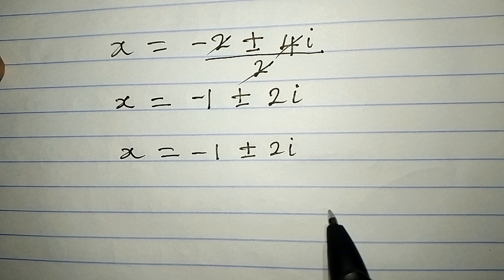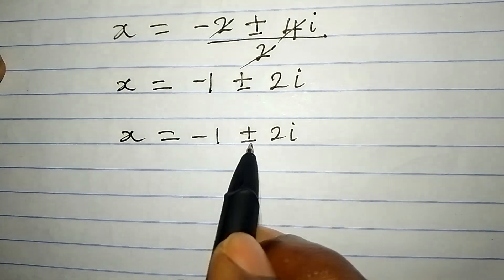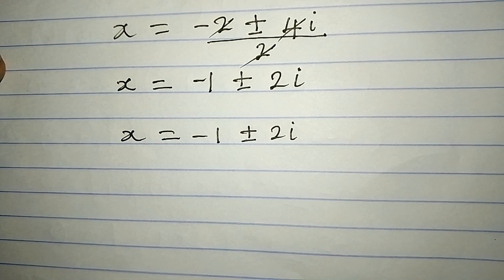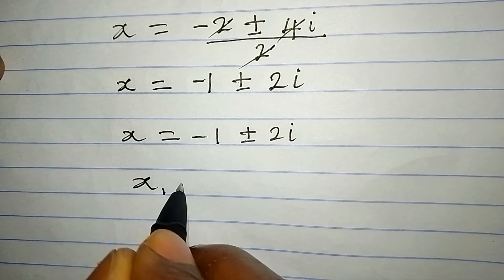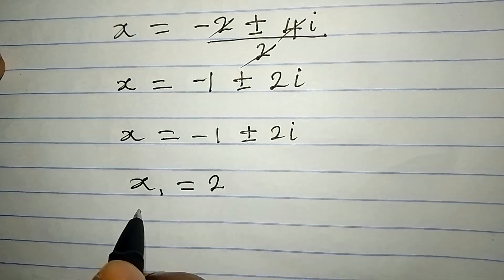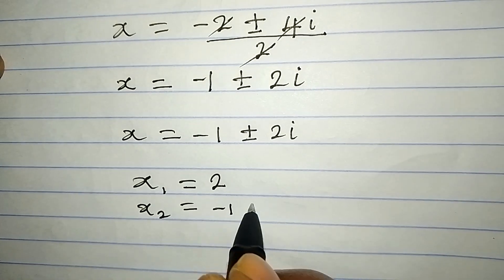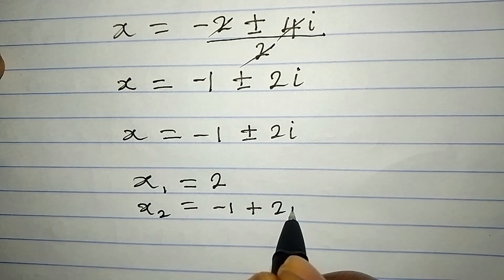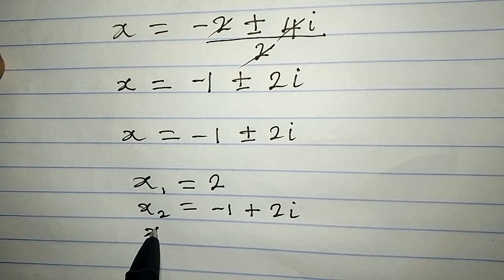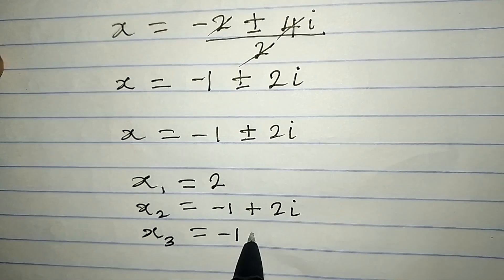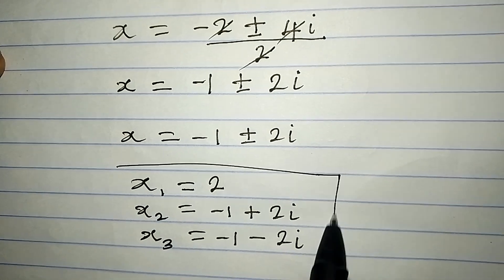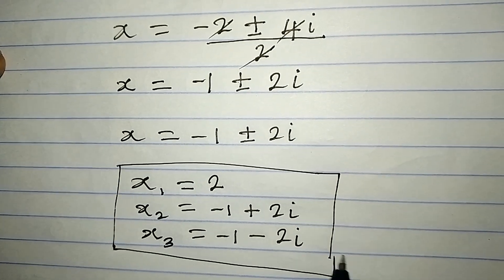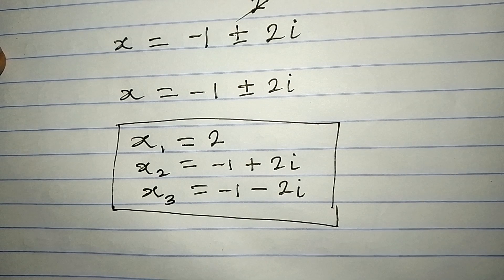This is a two-in-one solution because of the plus or minus. So our three solutions are: x₁ equals 2, x₂ equals minus 1 plus 2i, and x₃ equals minus 1 minus 2i. These are the three complete solutions to the problem. Remember that only the first solution, x equals 2, is the real solution.